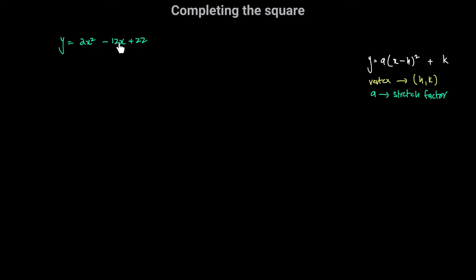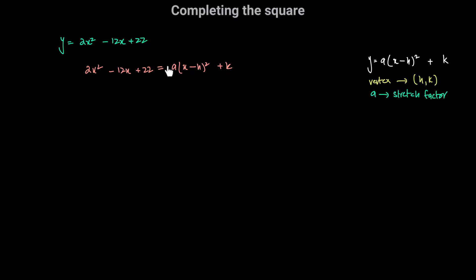Our objective is to write this in completed square form — in other words, for this quadratic expression, I want to find the values of a, h, and k. One way to do that is by equating the two expressions: 2x squared minus 12x plus 22 is equal to a times (x minus h) squared plus k. We can find the values of a, h, and k by comparing the coefficients.